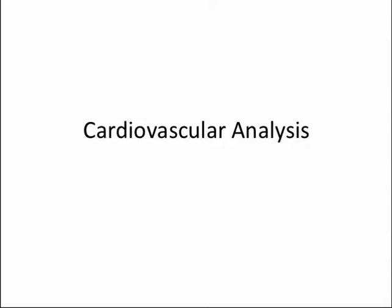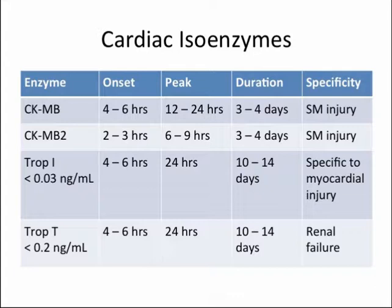Next, we will discuss cardiovascular labs. The cardiac enzymes include two variations of creatine kinase — MB — and two variations of troponin. Note that troponin I is the most specific to myocardial injury, whereas the others may elevate with other pathologies. The reason some clinicians also use CK-MB is to narrow down the time frame. These labs are particularly useful in determining myocardial ischemia and infarction.